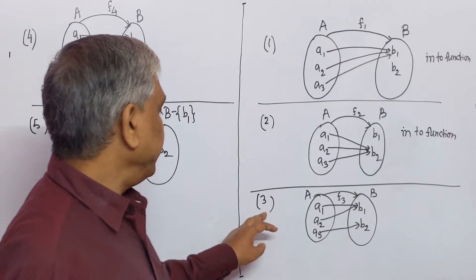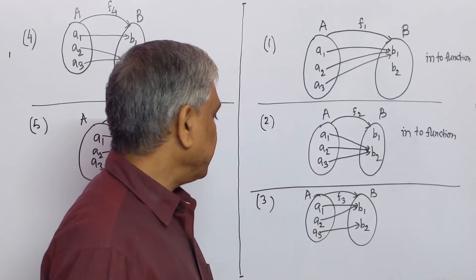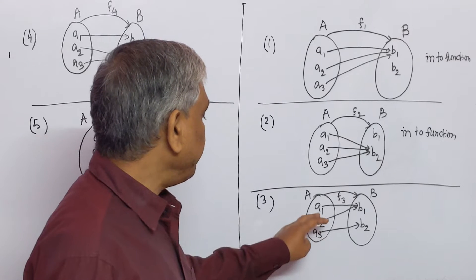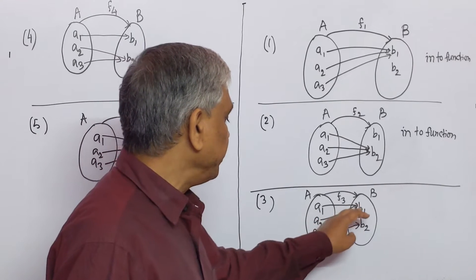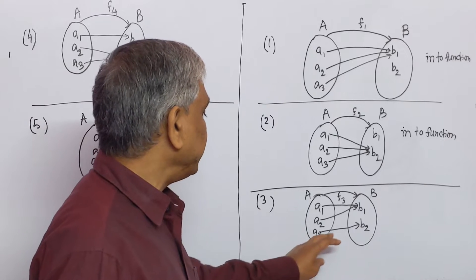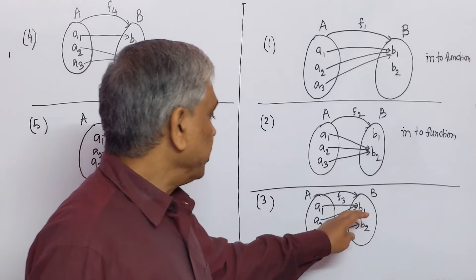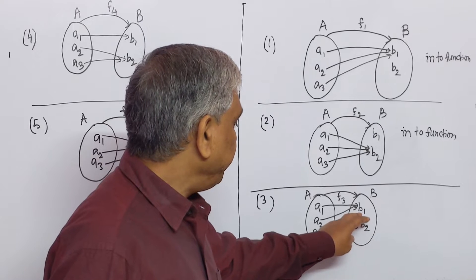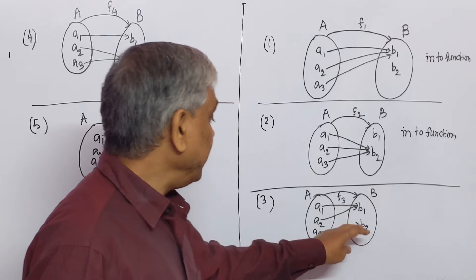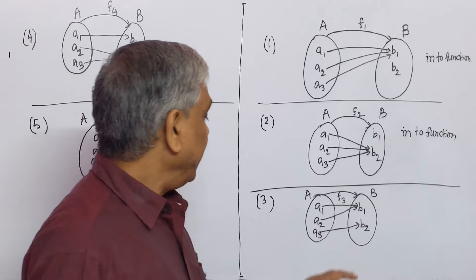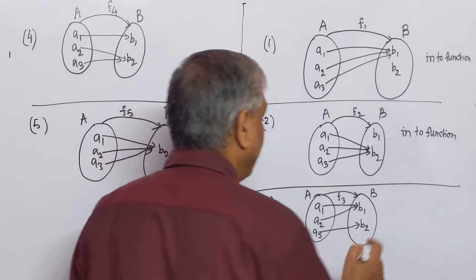Now, we see number 3. Here, F3 is a function in which image of A1 is B1, image of A2 is B1, and image of A3 is B2. Here, we get that every element of B has a pre-image, and this type of function is known as an ONTO function.